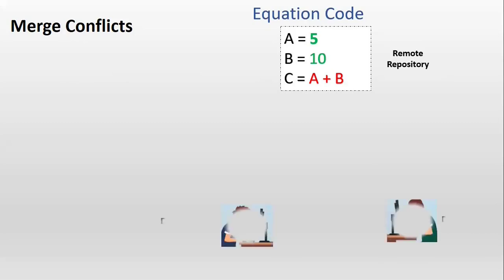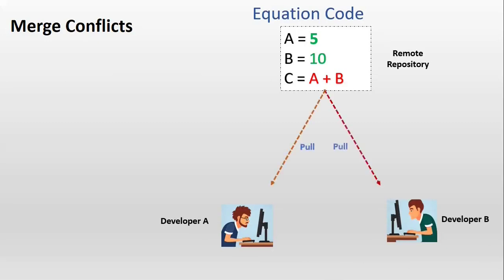We have two developers — developer A and developer B. Both have got two different development requirements. So both have started cloning the source code to their local system. After cloning, they started their development.